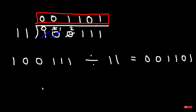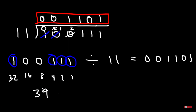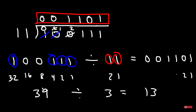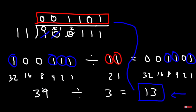Let's confirm: one zero zero one one one one divided by one one should equal zero zero one one zero one. Converting to decimal: bit weights are 1, 2, 4, 8, 16, 32. The dividend has 32 plus 4 plus 2 plus 1 equals 39. The divisor has 2 plus 1 equals 3. Thirty-nine divided by 3 is 13. Checking the quotient: 8 plus 4 plus 1 equals 13. Our answer is confirmed correct.